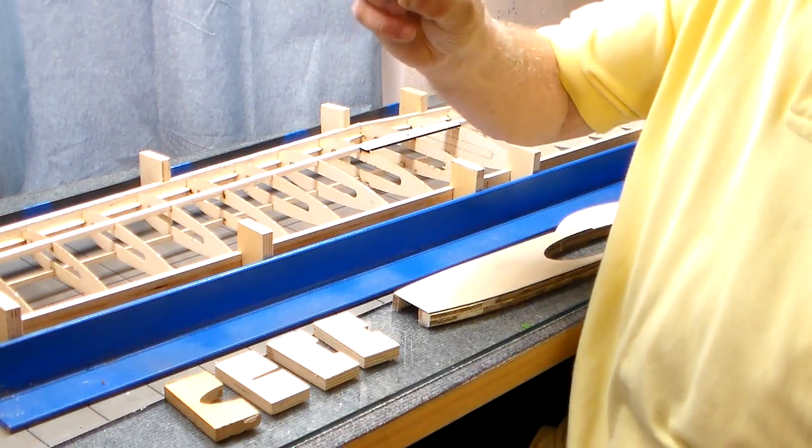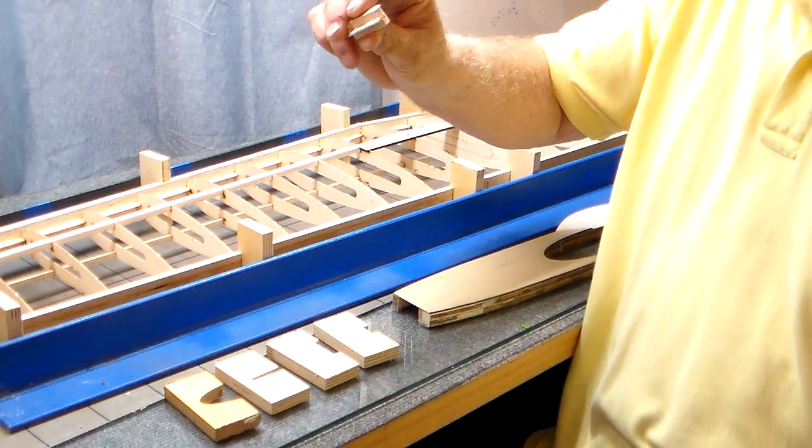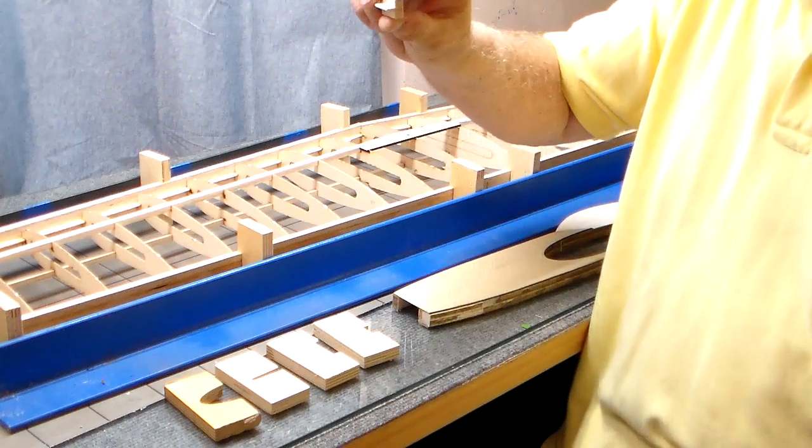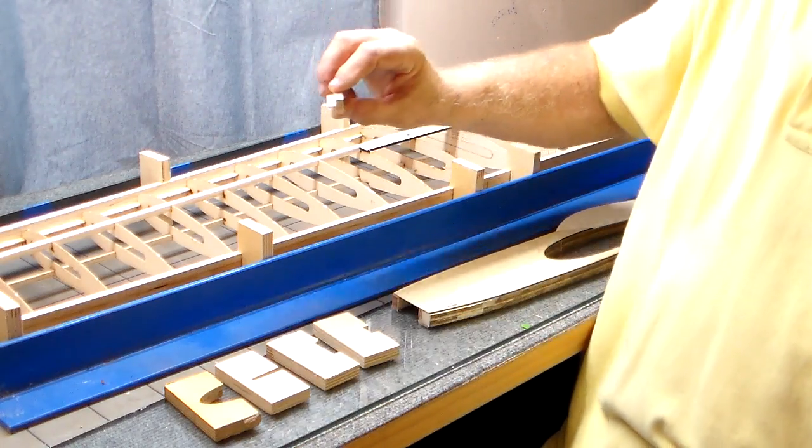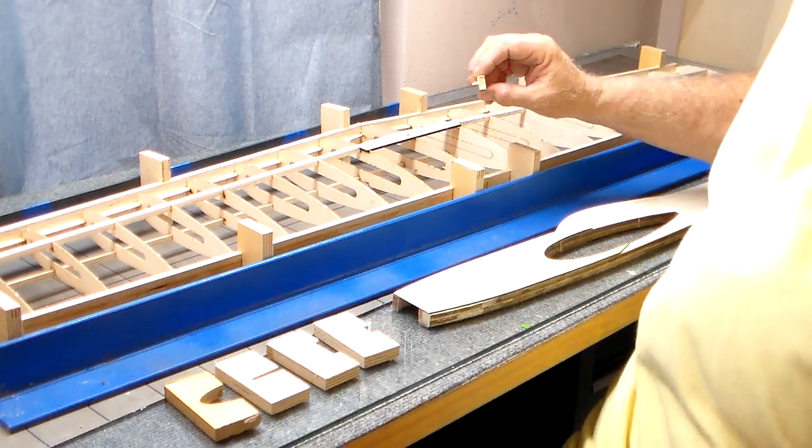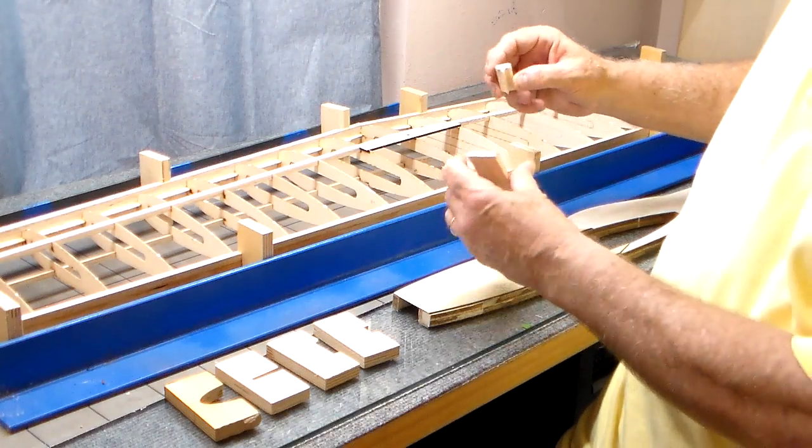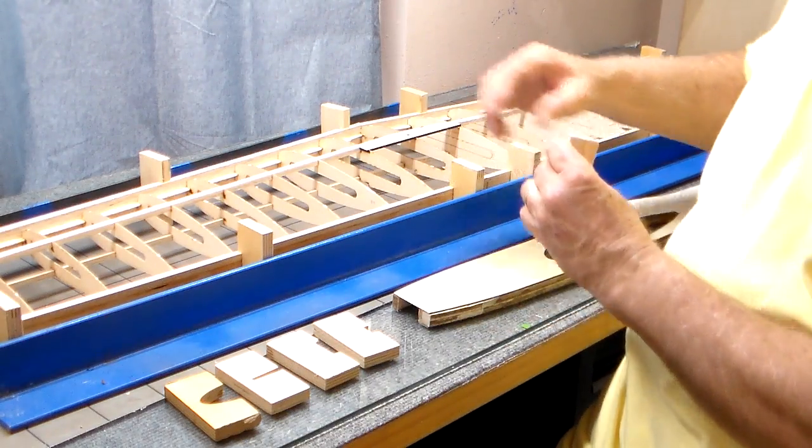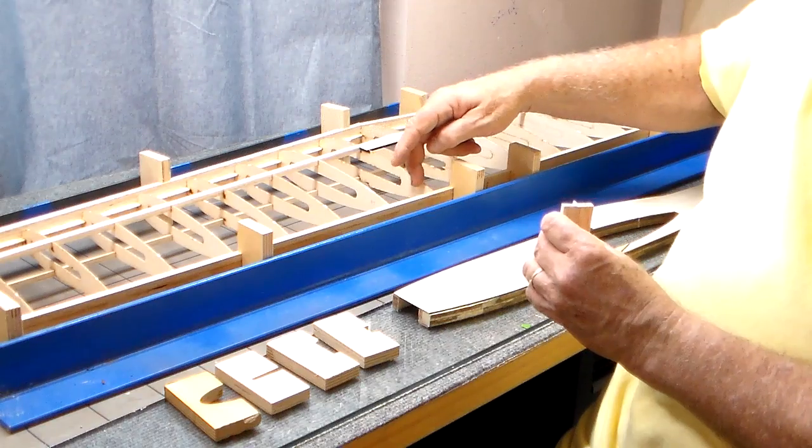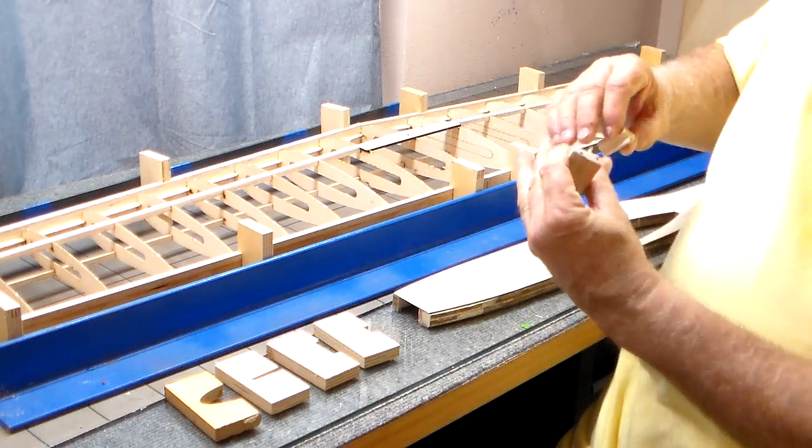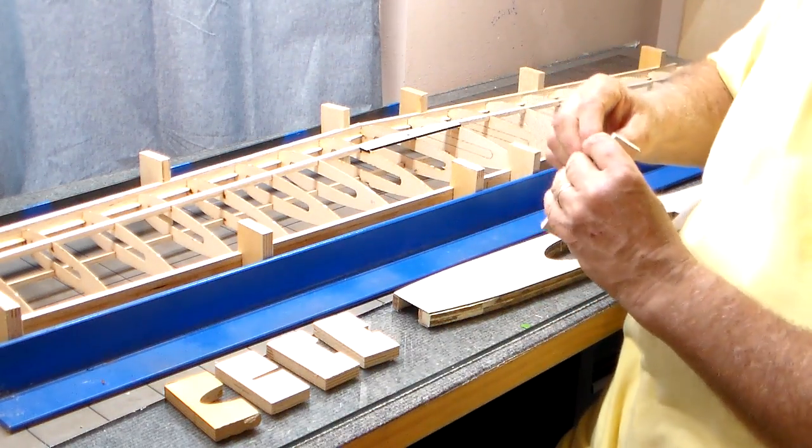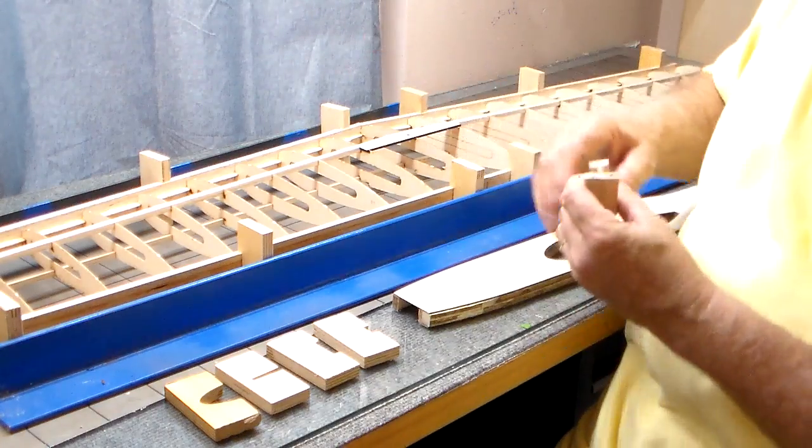Your trailing edge is two pieces of 1/4 by 1/4 with a piece of 1/16 by 1/2 sandwiched in between it. So your ribs have slots in the front and slots in the back and they just simply slide over this and you glue it. That's what you do for your leading and trailing edges.